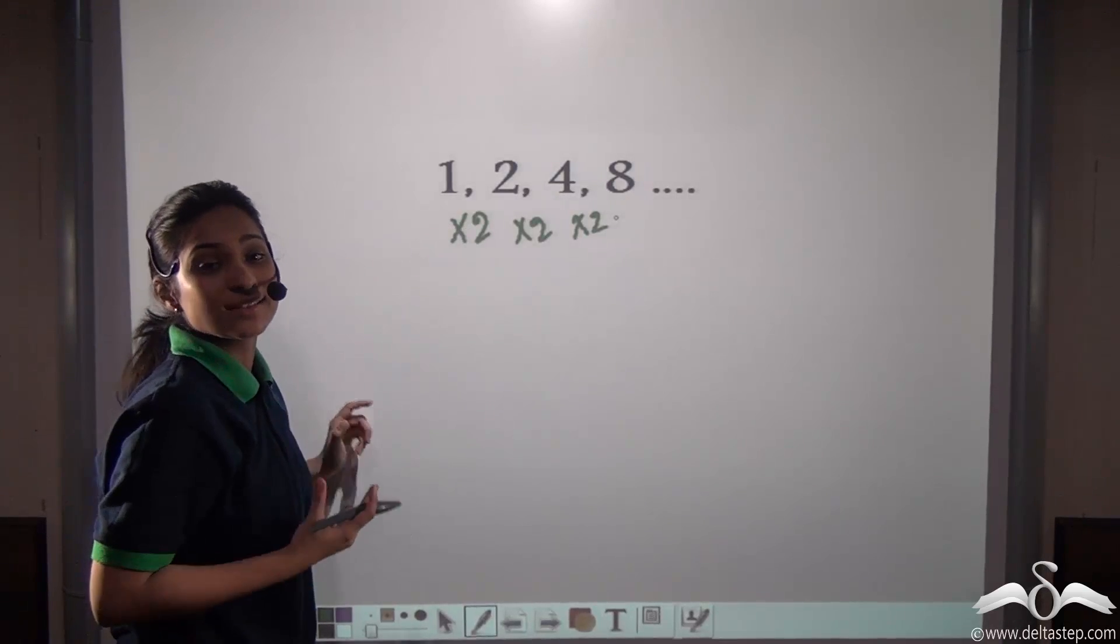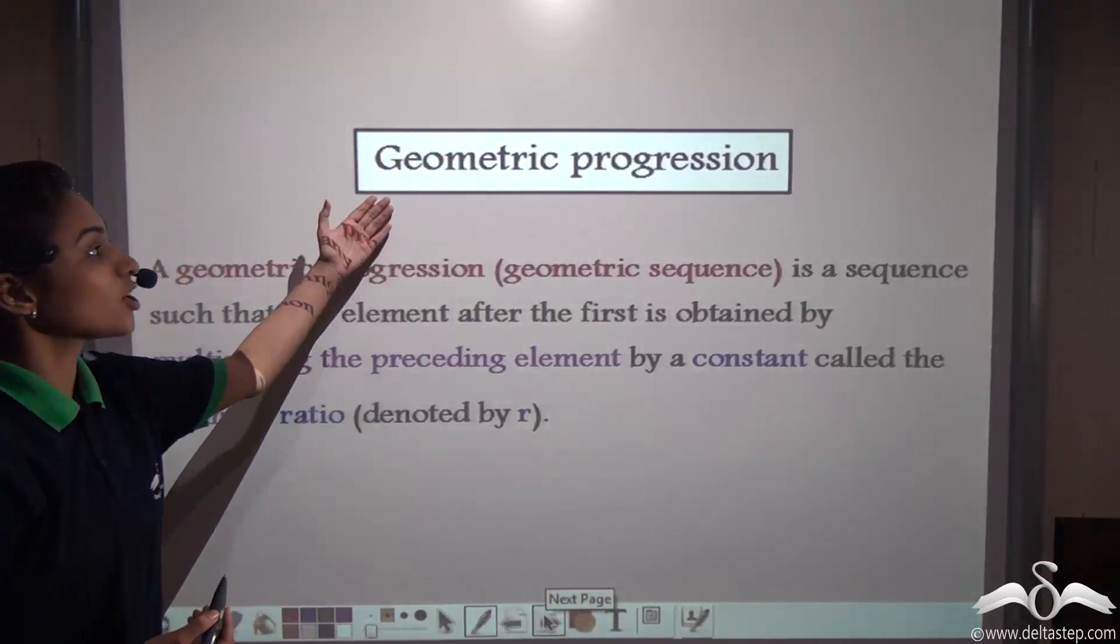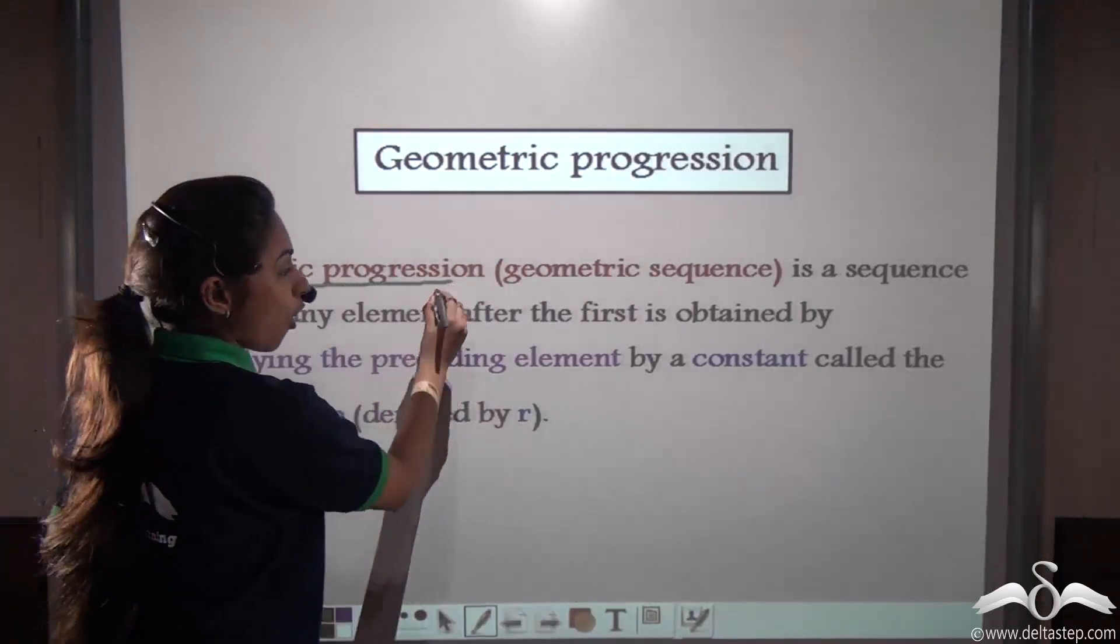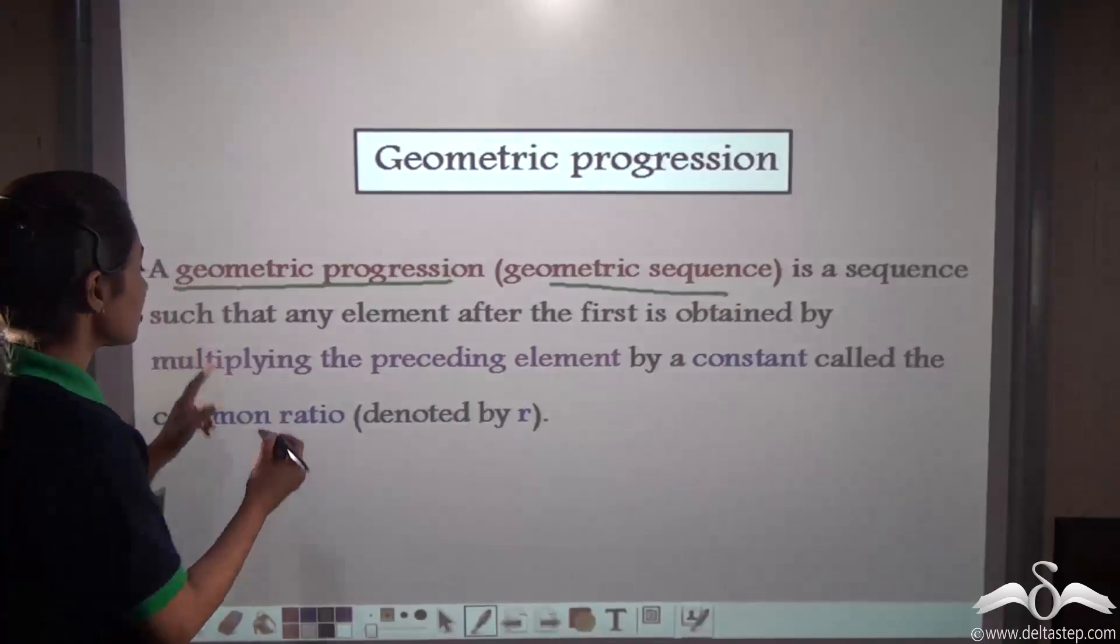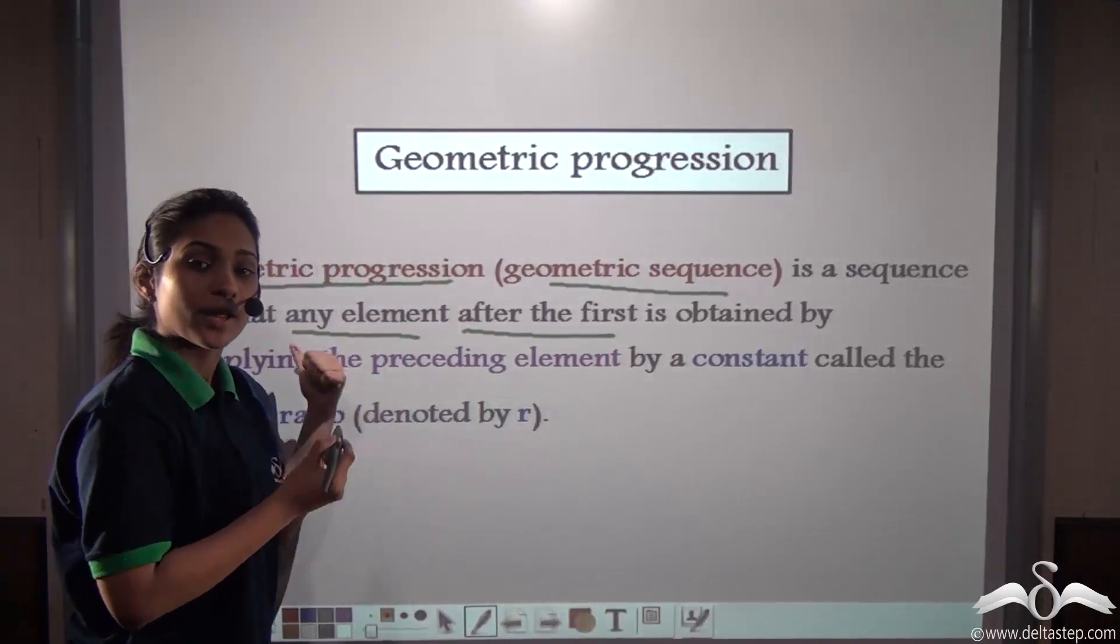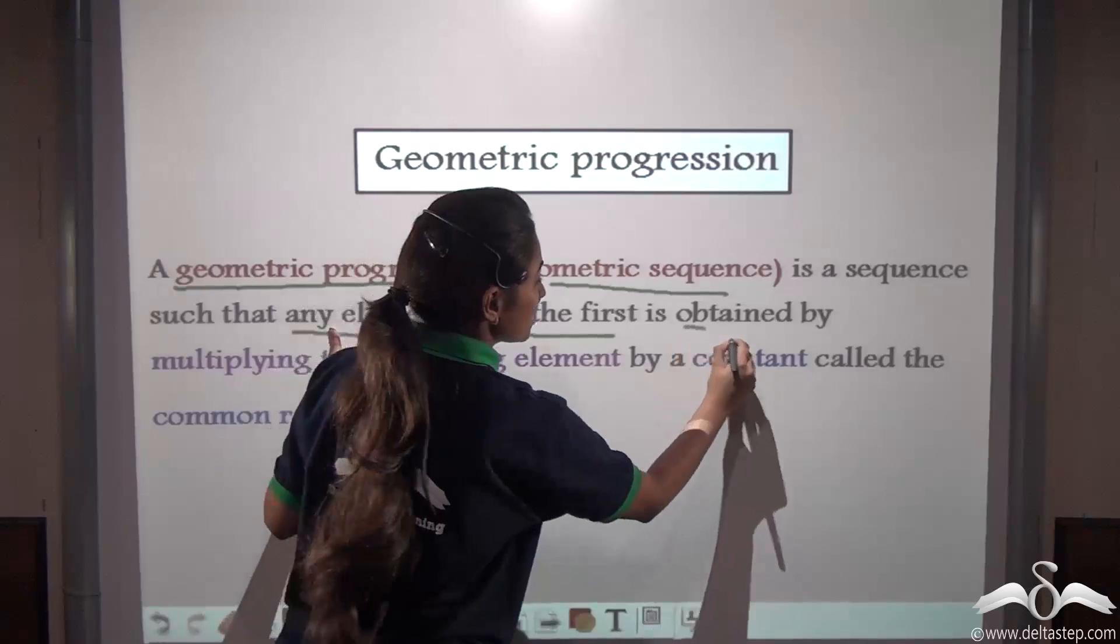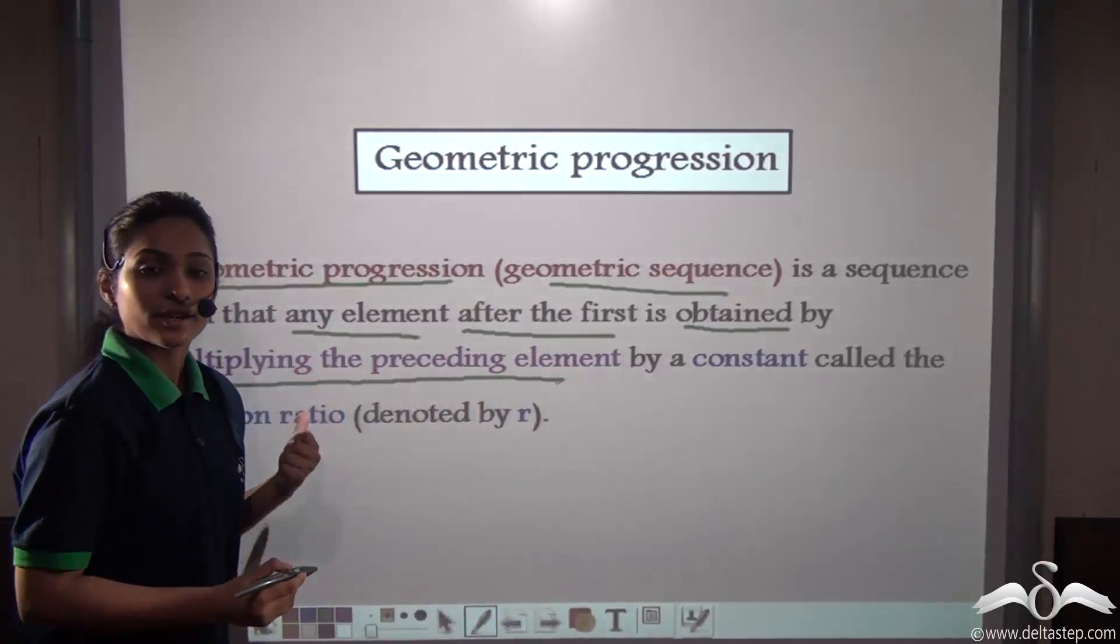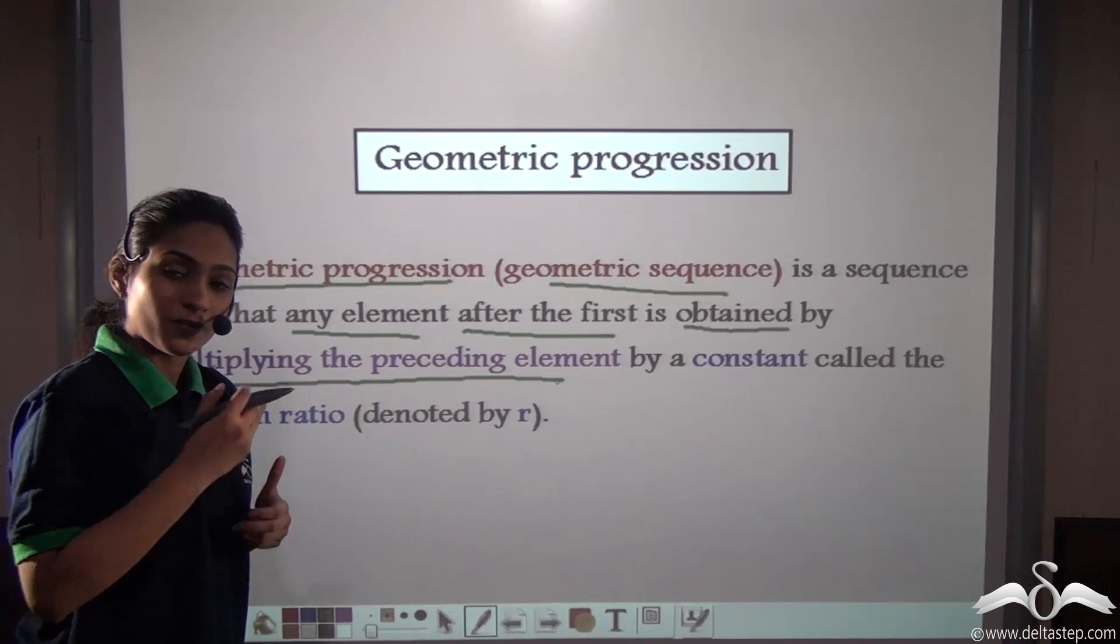What is GP? Well, GP means geometric progression. A geometric progression or you can say a geometric sequence is a sequence such that any element after the first, that is after the first number - here the first number was one - is obtained by multiplying the preceding element by a constant. In our case, what was the constant? We were multiplying each number by two. We were doubling them.